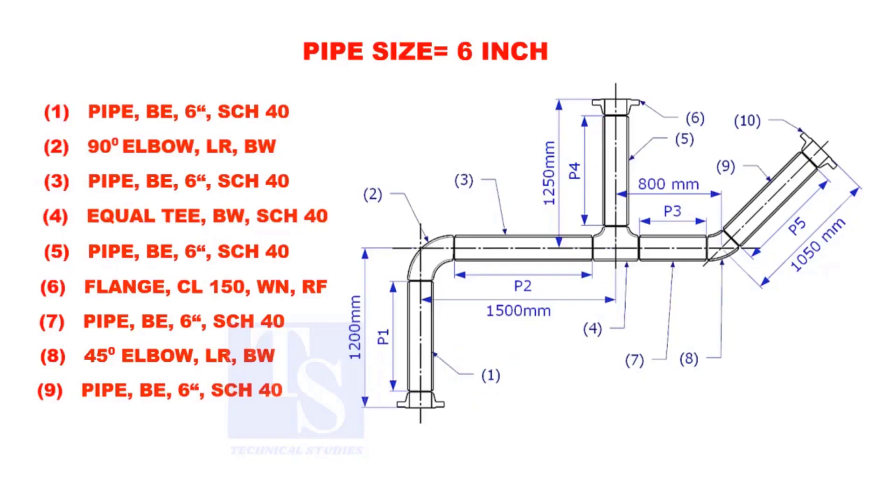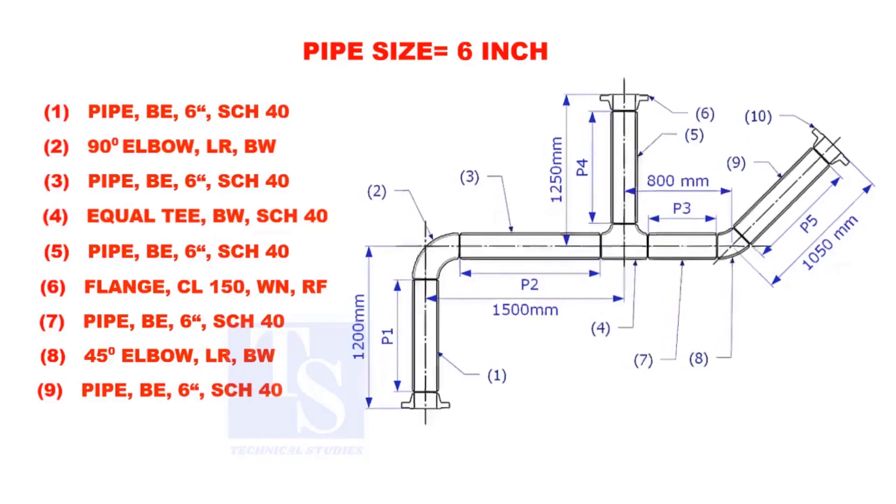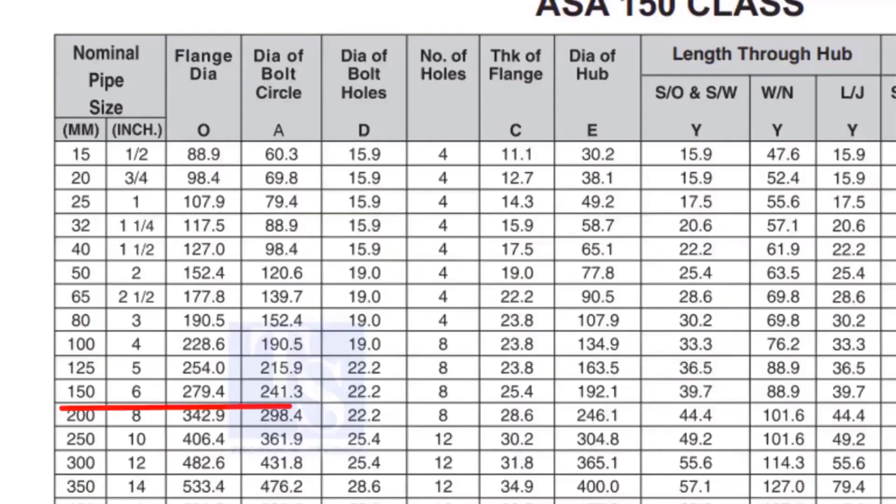To calculate the length of pipe 1, we need to reduce the flange height and the elbow center from the measurement 1200mm. Check the height of the flange in the table. Since the pressure rating is 150, the height of the flange is 88.9mm. Note down the height.